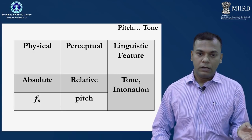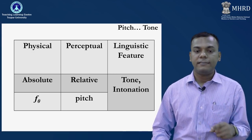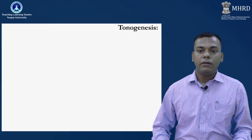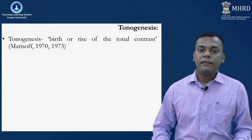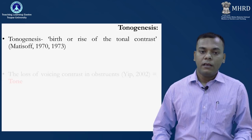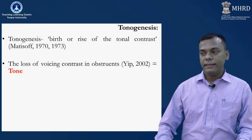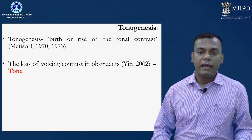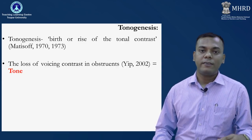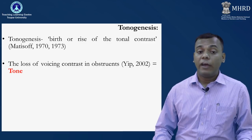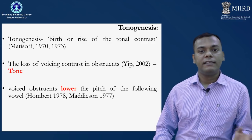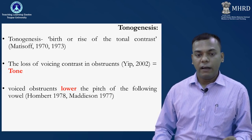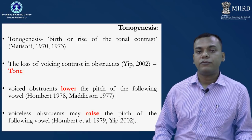For intonation or tonal analysis, we exploit F0-related information. Tonal analysis involves the birth or rise of tonal contrast. The loss of voicing contrast in obstruents — voiced and voiceless — means that if at a certain point of time a language neutralizes the voiced/voiceless distinction, you may develop tone to compensate for that loss. Voiced obstruents generally lower the pitch of the following vowel, whereas voiceless obstruents may raise it.